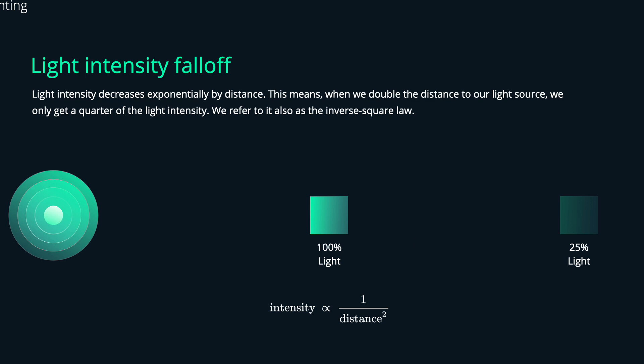If we have a closer look at the light intensity falloff, we have to understand that light decreases exponentially by distance. This means when we double the distance to our light source we only get a quarter of the light intensity at the referred object. We can also refer to this as the inverse square law. As you can see in this illustration, over a given distance, if you double the distance the light intensity will only be a quarter of that.